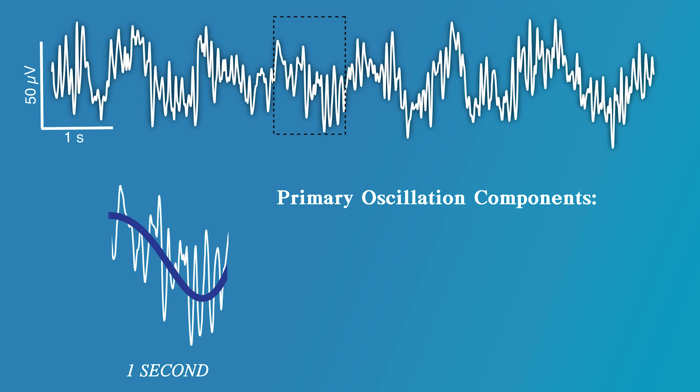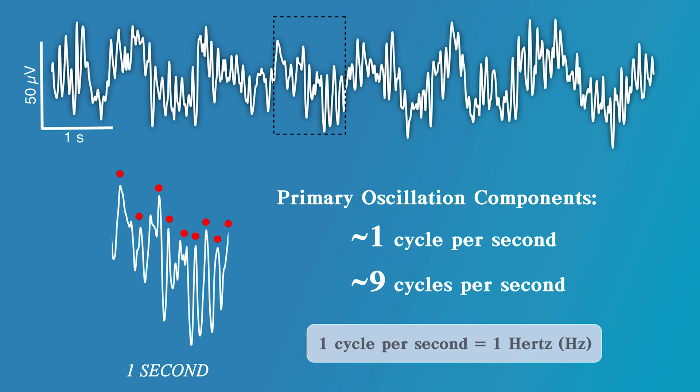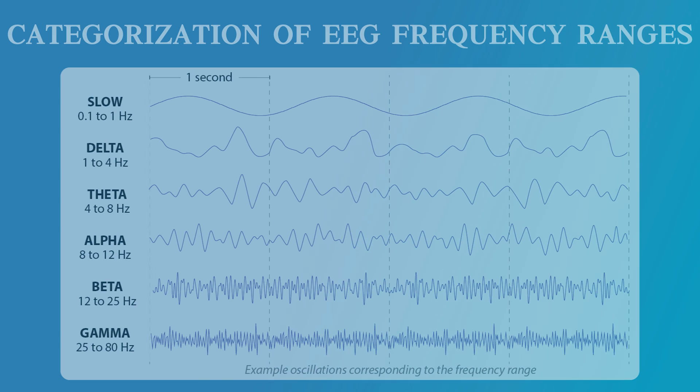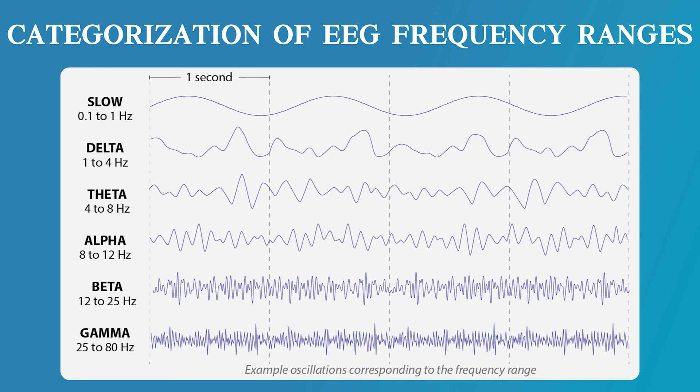First, we have this slow, gradual wave which does not quite complete one full cycle within this one-second time frame. There is also a more rapid oscillation that we can determine the frequency of by counting the number of repeated cycles present within the one second. There are about nine cycles. We use the measurement of hertz to denote the number of cycles per second. There is an associated nomenclature used to categorize the frequency of the oscillations that combine to make up the waveform.